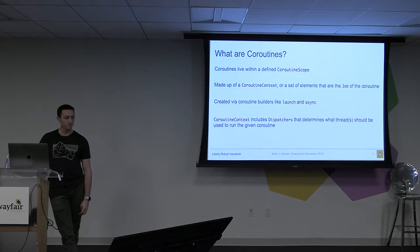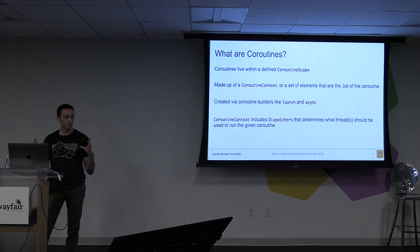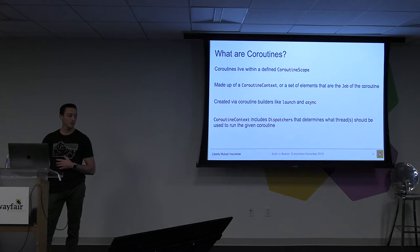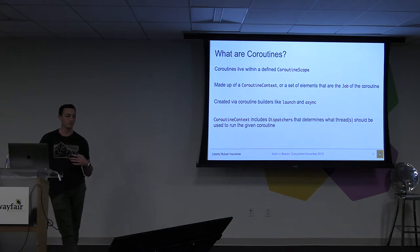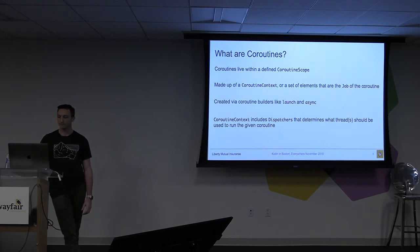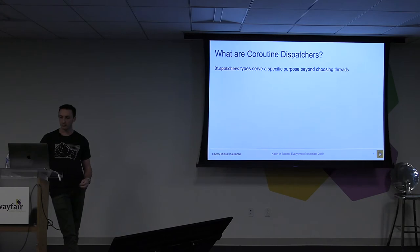So back to what are coroutines. Coroutines live within a coroutine scope. That coroutine scope is the outermost piece of the coroutine, and it's made of a coroutine context, which is a set of elements that perform a certain job in the coroutine. That coroutine context contains dispatchers that have coroutine builders which actually do the processes happening inside of it.